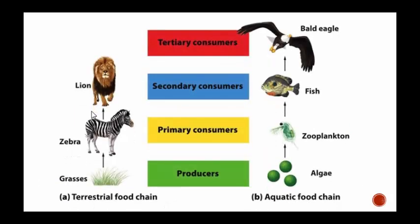Here's another food chain — a terrestrial food chain. Terrestrial meaning land, aquatic dealing with water. We take a look at the lion. The lion is two steps away from the producer, one step away from the zebra, who is the primary consumer. It lets scientists know how much energy is being transferred by knowing how many steps away we are, and we'll take a look at that a little later.